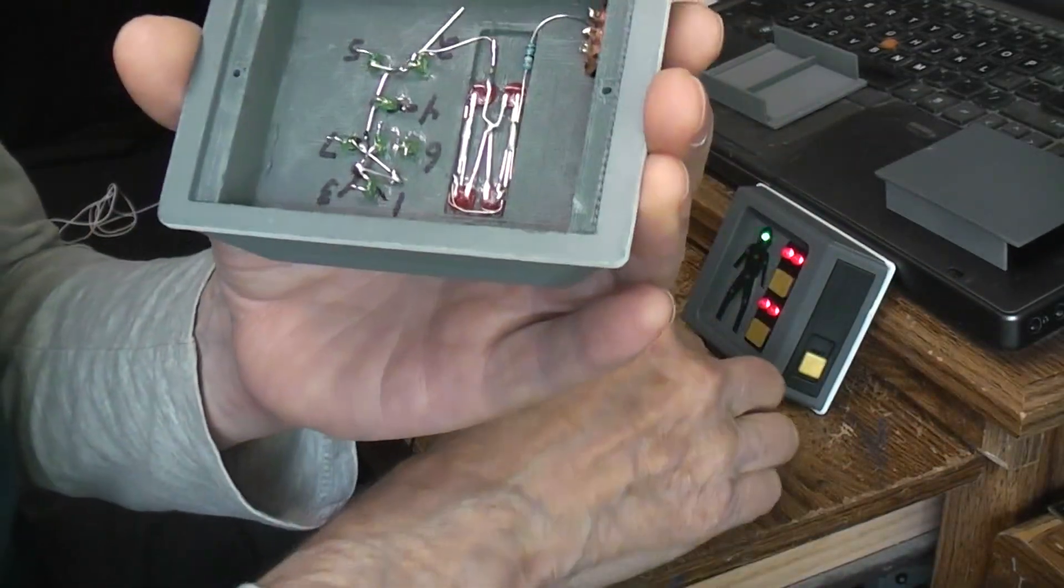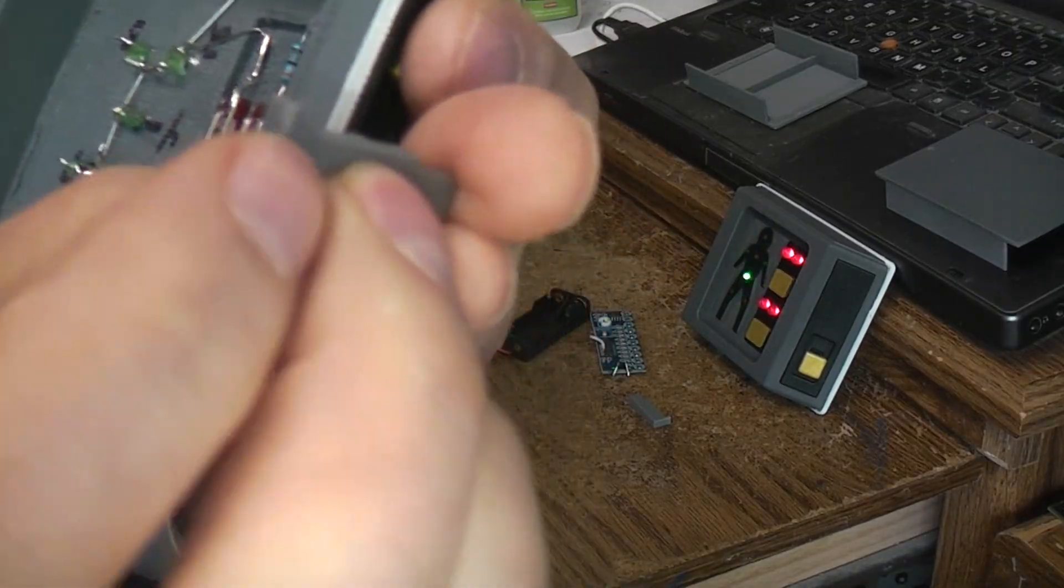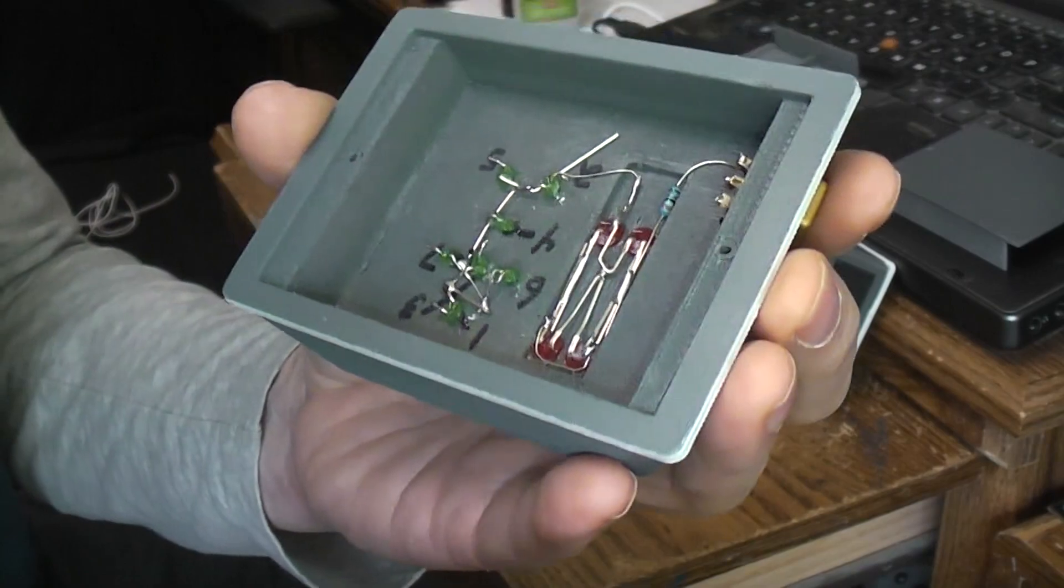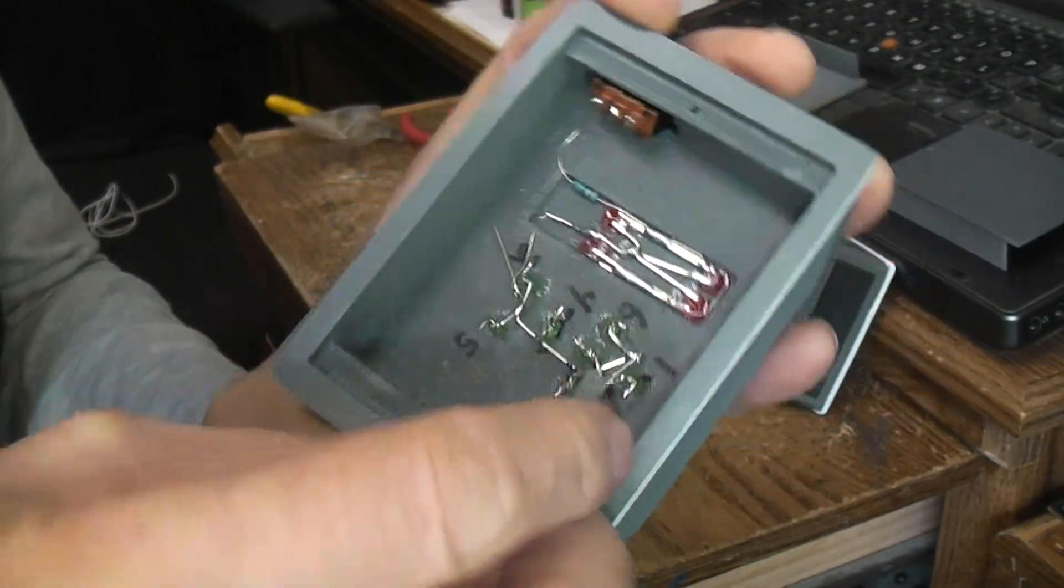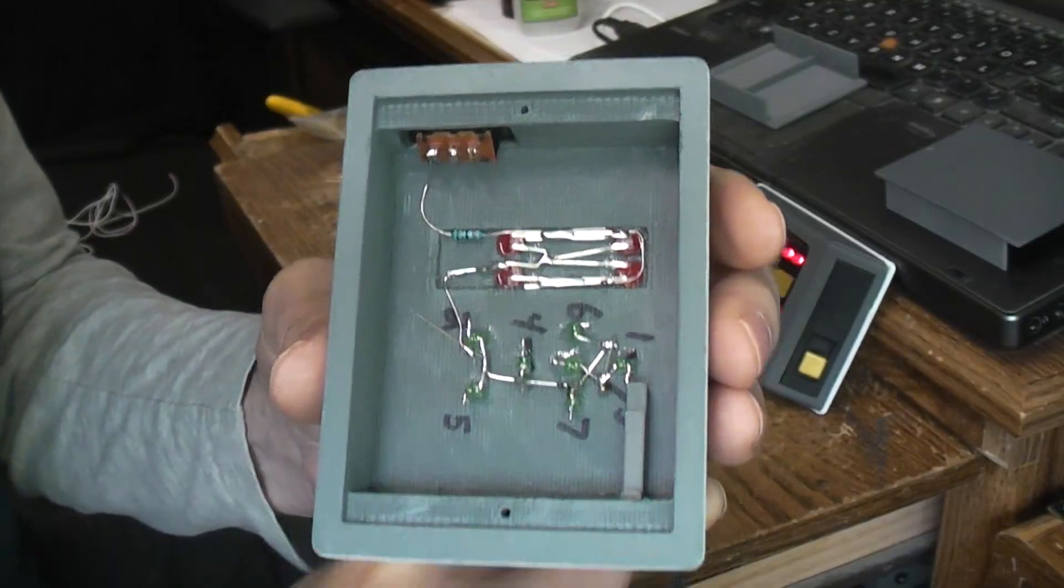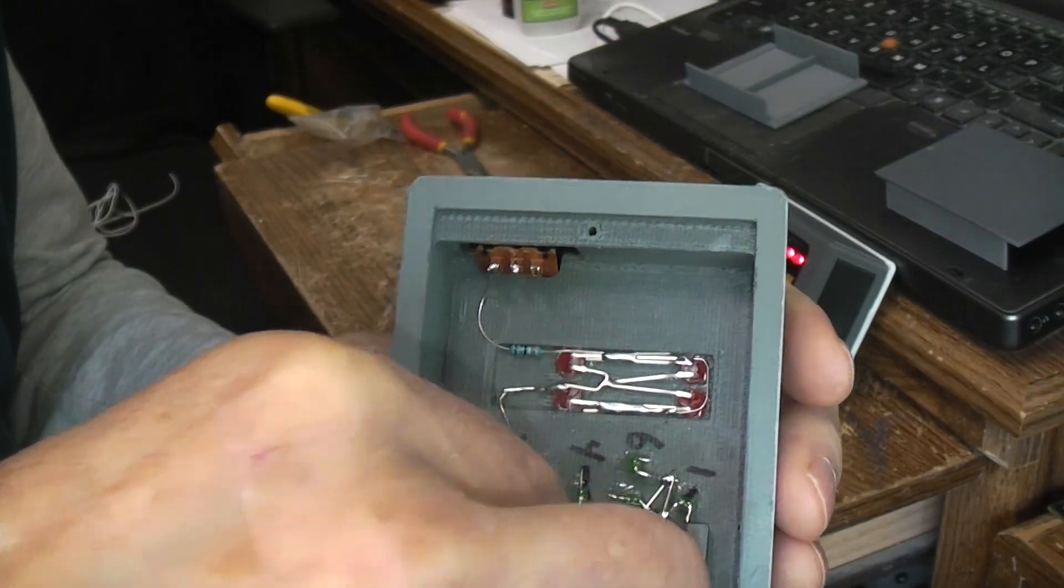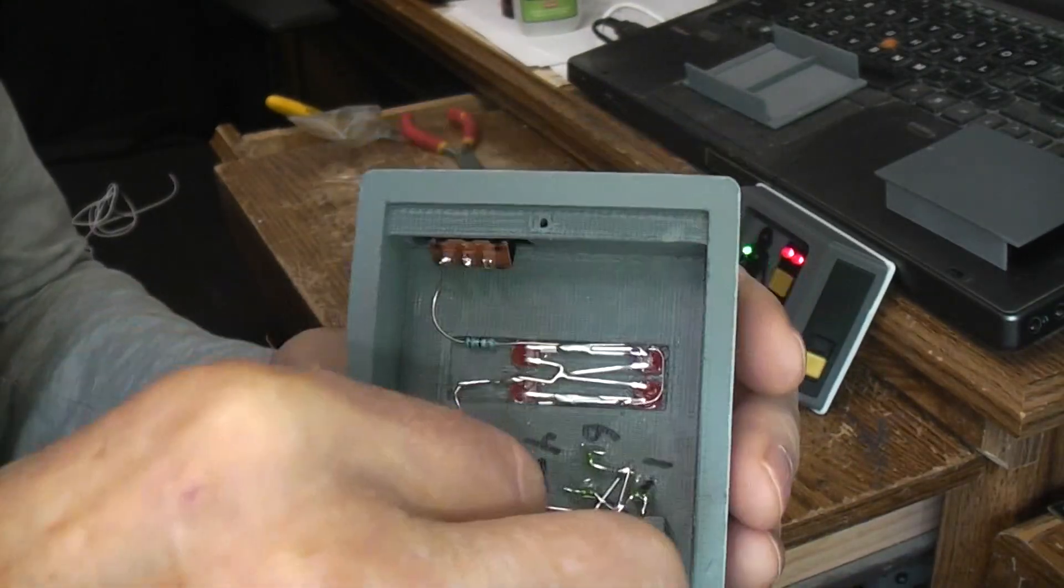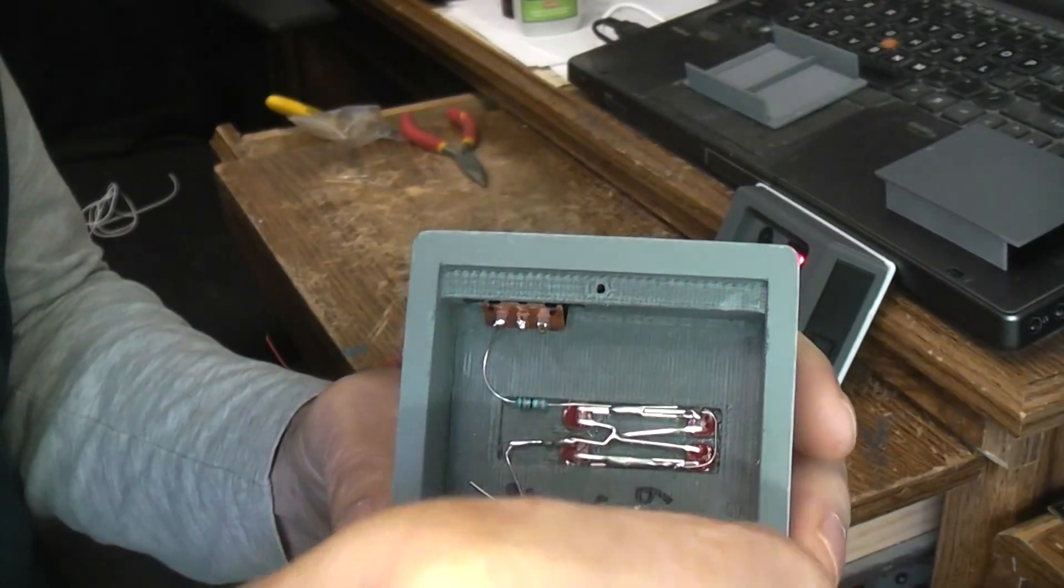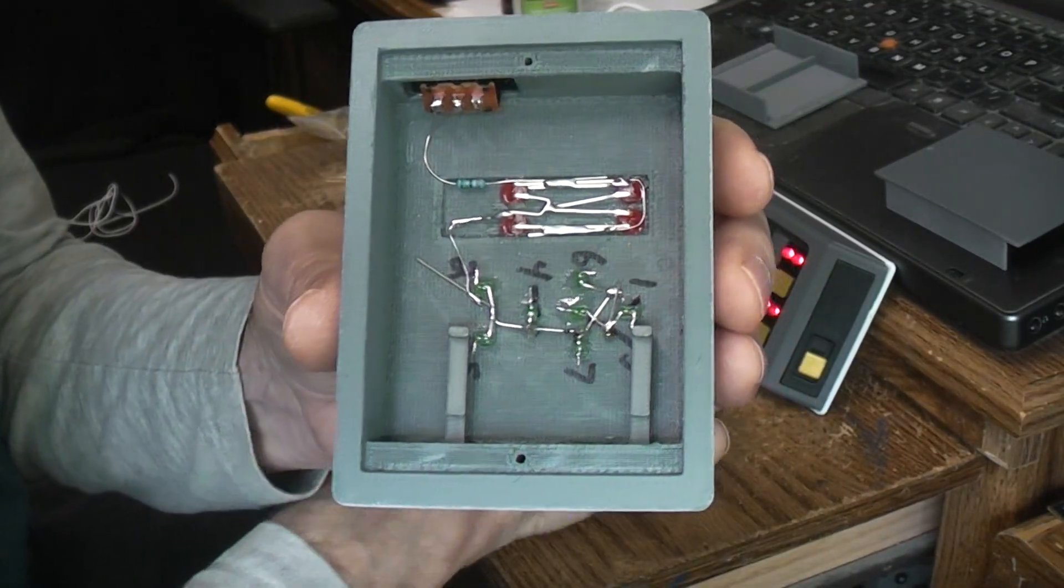Now, what was also printed is two of these little risers. You want to print those with no supports required. They're going to be going in roughly like so. Actually, I've got them turned backwards - they go like this.